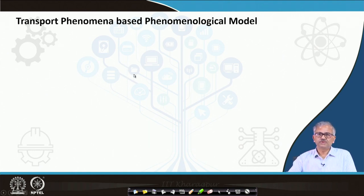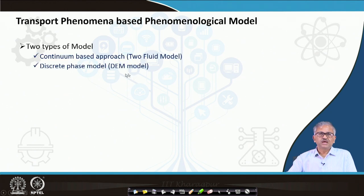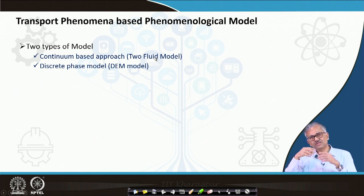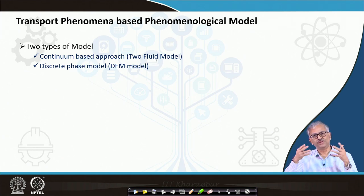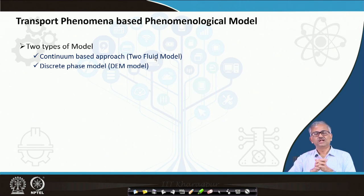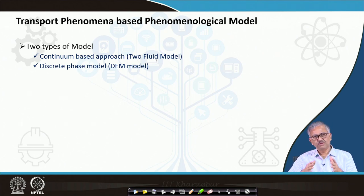There are two types of transport phenomena-based models. One is the continuum-based approach — in the blast furnace this is called a two-fluid or three-fluid model — because in the continuum approach, all the solids (coke, iron ore, flux) are considered as one continuum phase treated as a fluid with higher viscosity. That is a key assumption in the continuum-based model. It may be a two-fluid or three-fluid model depending on the blast furnace, but it is called the continuum-based approach.